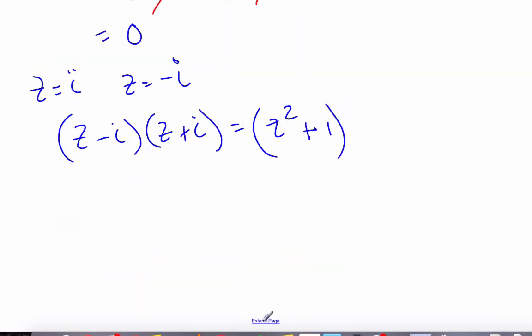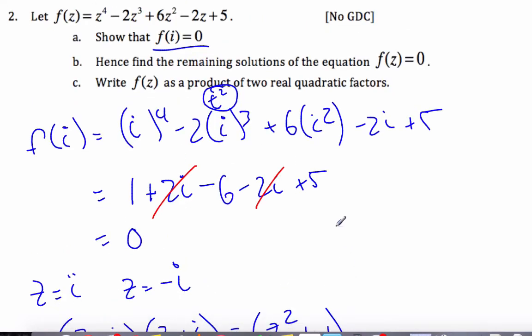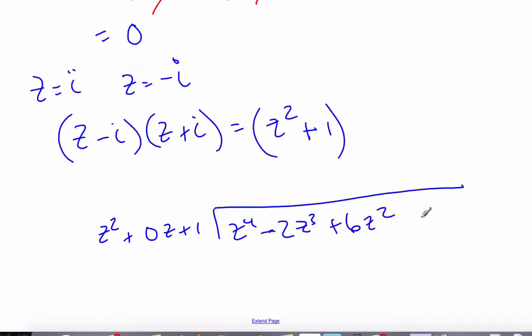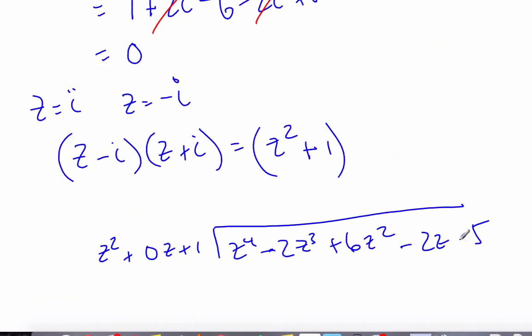So if I take z squared plus 0z plus 1, and I'm going to divide it into z to the 4th minus 2z cubed plus 6z squared minus 2z plus 5.